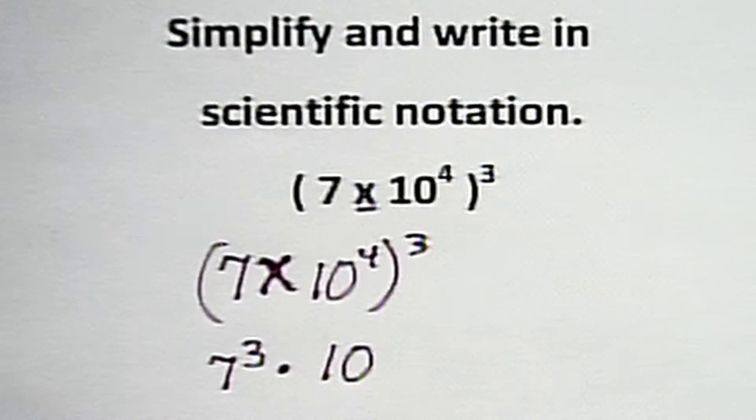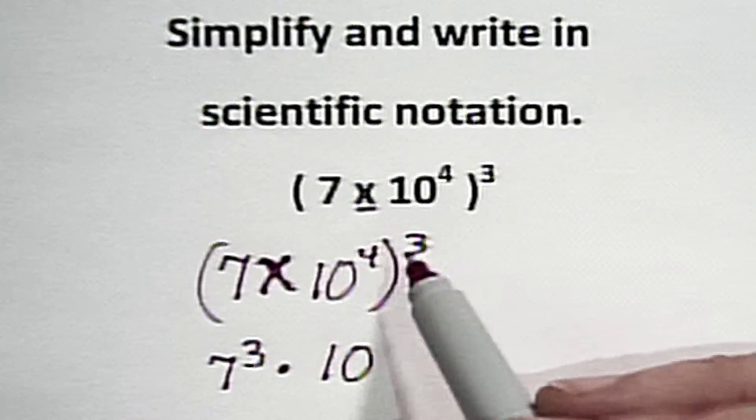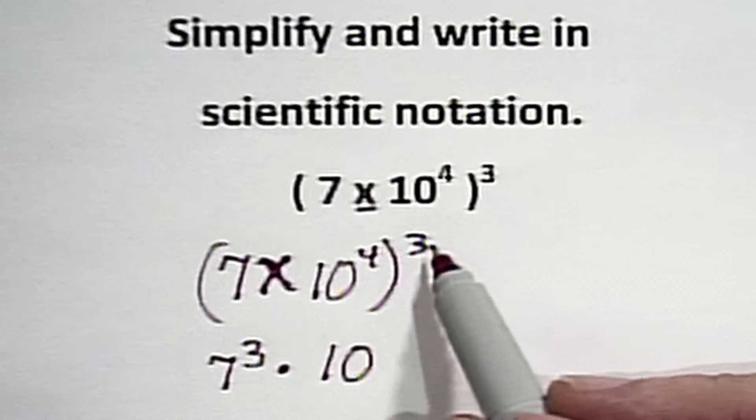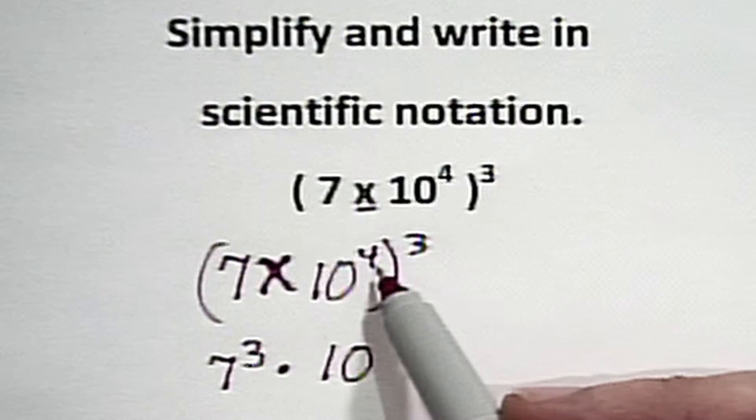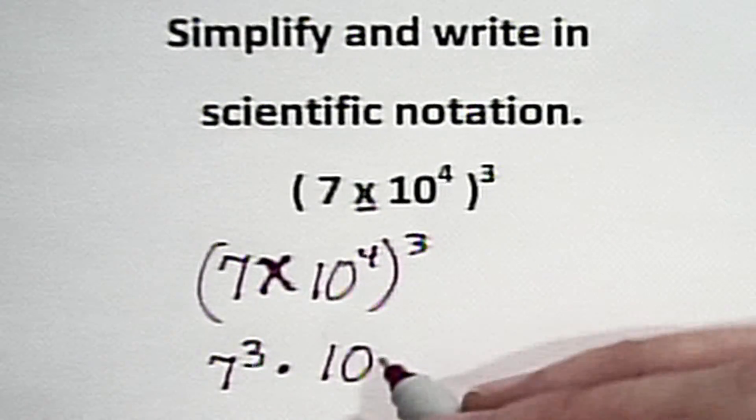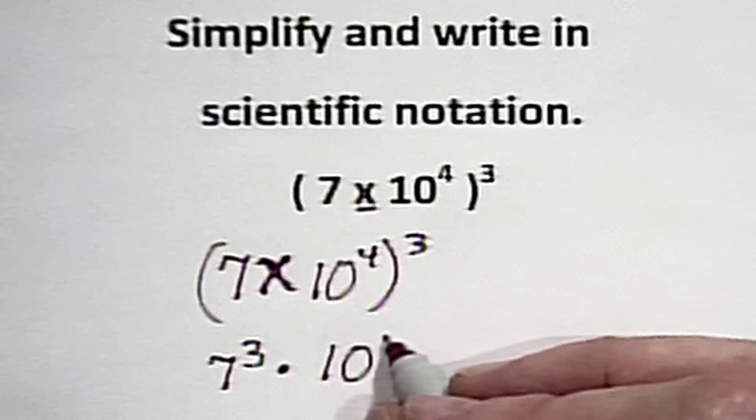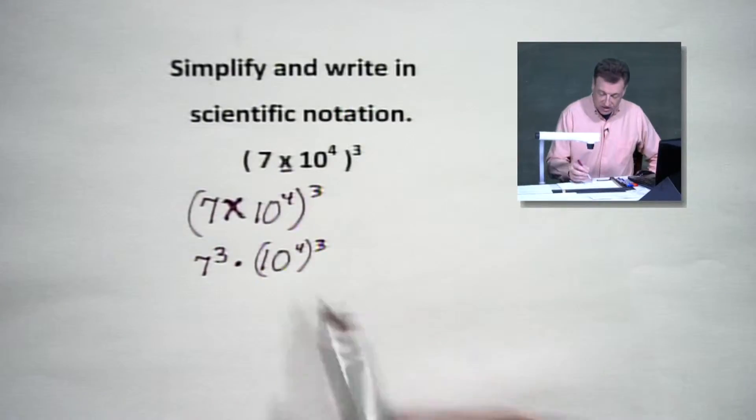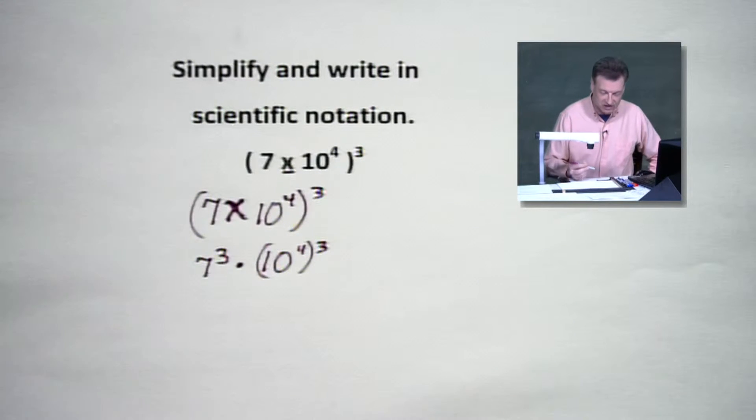What do we do when we have a four and a three there? We are not going to add them, nope. We're going to multiply them because that three is kind of attached to the parenthesis out there. Just like we made this go to the third power, we're going to take this ten to the fourth and raise it to the third power also, which is going to give us twelve. We're going to multiply. No plussing on this.